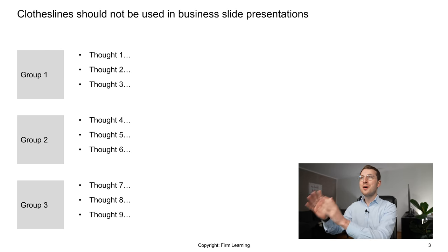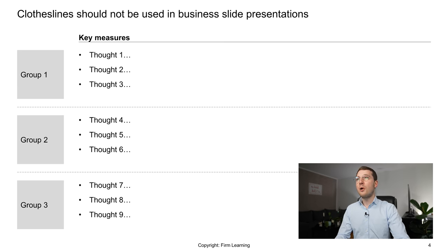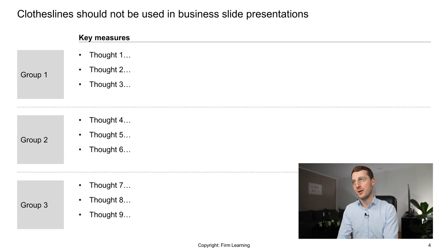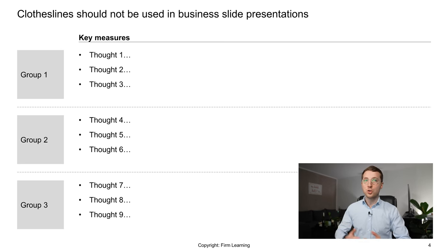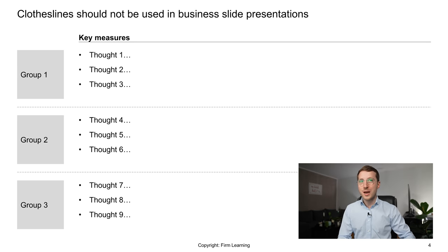Within those clusters, then sit the thoughts you wanted to discuss originally. Going one step further, separator lines can help clean things up. Adding a title is also important — without one, the slide often looks random. A simple title like 'Key Measures' creates clarity, and it also disciplines your thinking: every point should genuinely be a key measure, not just a random thought you wanted to add.